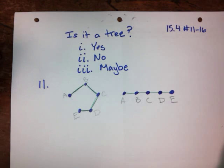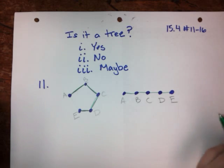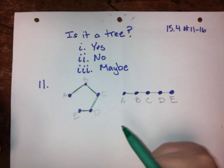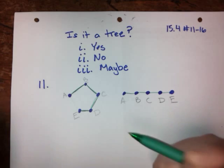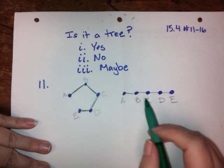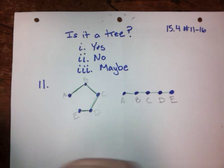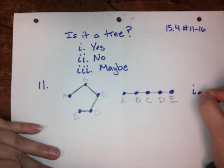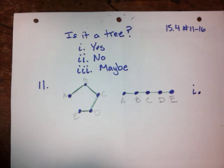Is it a tree — yes, no, or maybe? I don't see any cycles. Do you see any cycles? No. That's a very good sign that we're looking at a tree. The other thing we need to check is: is it connected? And it is absolutely connected — it's all one piece. So the answer for number 11 is going to be 1, yes. If we have a graph with five vertices and exactly one path from any vertex to any other vertex, that graph has to be a tree.